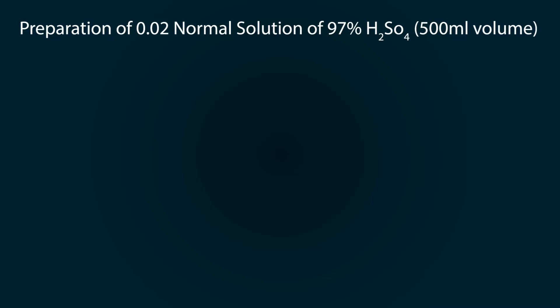For this we will use the formula N1V1 = N2V2, where N1 is the normality of H2SO4 which is 36.4, and N2 is the normality of our required solution which is 0.02 normal.